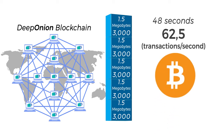Compare that to Bitcoin, which has a maximum transaction rate of 3 to 7 transactions a second and can process them in 10-minute intervals. DeepOnion is really, really fast.